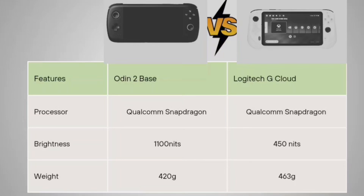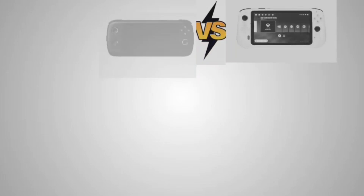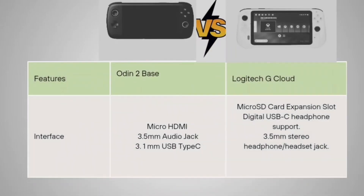Weight is 420 grams for the Auden 2 Base and the Logitech G Cloud is having 460 grams. So here also your Auden 2 Base is quite good compared to your Logitech G Cloud.